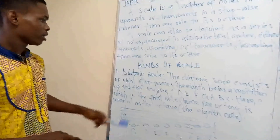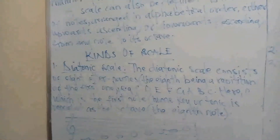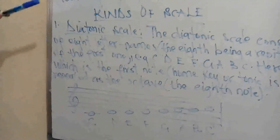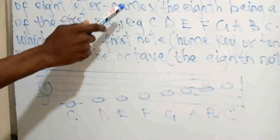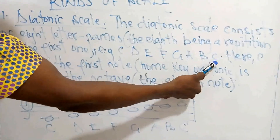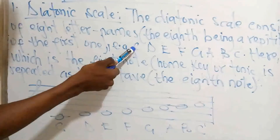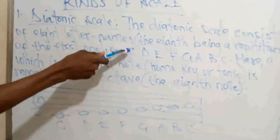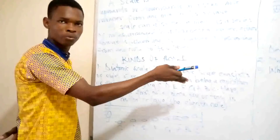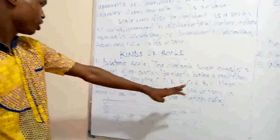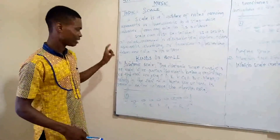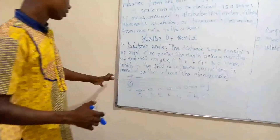On the diatonic scale, the scale consists of eight notes or eight letter names. The eighth letter name is a repetition of the first one. For example, C is the first note — one, two, three, four, five, six, seven, and eight. The eighth note is the repetition of the first note, so this scale literally contains seven unique notes. C, which is the first note and is your home key, is repeated as the octave — the eighth note.